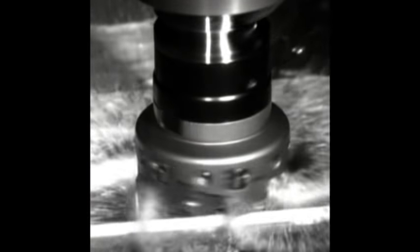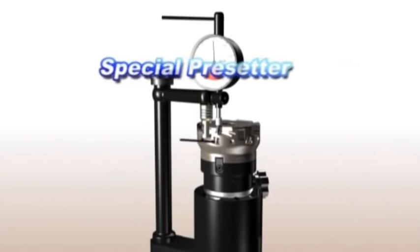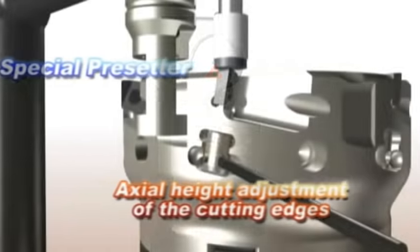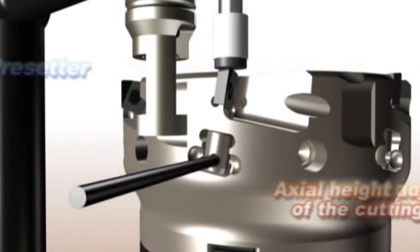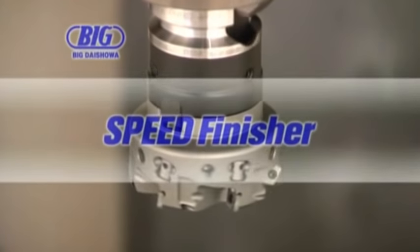Speed Finisher is an ultra high speed face mill cutter for finishing. Our original simple adjusting mechanism allows for quick and precise insert height adjustment and improves the surface finish under high speed rotation and high feed rates.